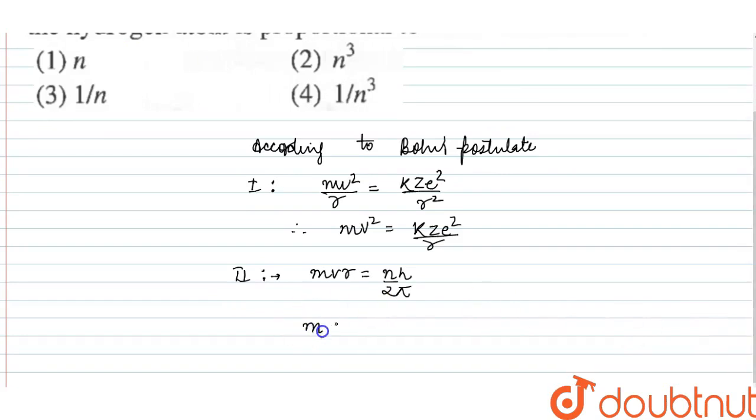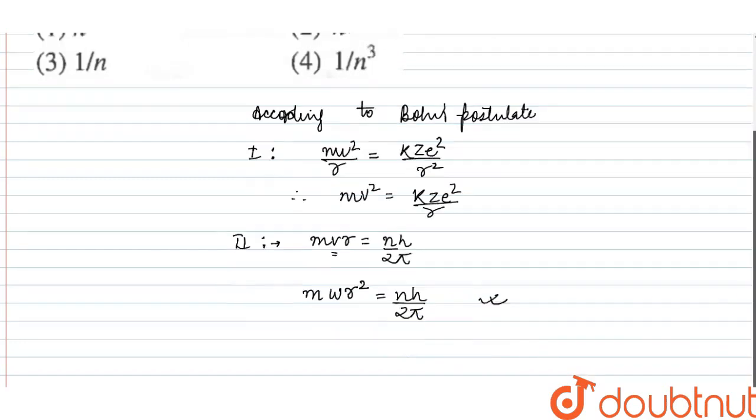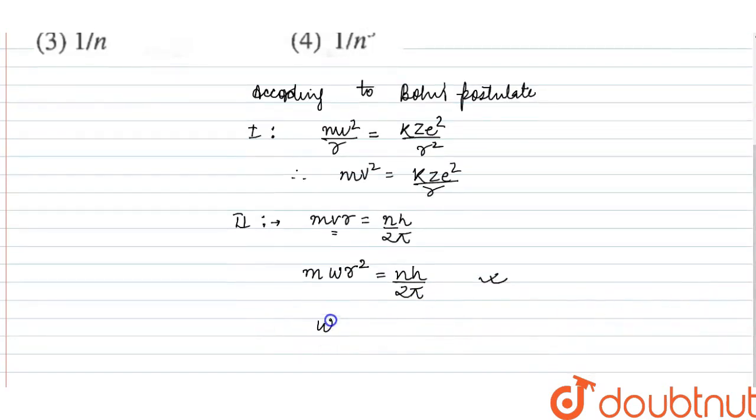We can write mωr² = nh/2π. Therefore, omega equals nh divided by 2π times m times r².